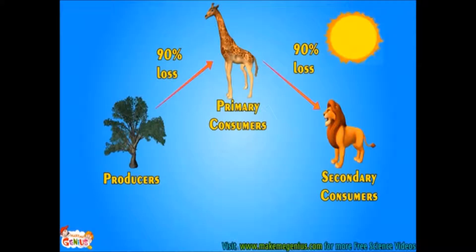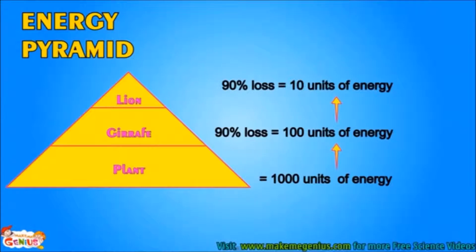So does the giraffe get all the energy from the plant, which the plant received from the sun? Or does the lion get all the energy from the giraffe, which the giraffe got from the plant? The answer is no. Actually, 90% of energy is lost when it passes from one part of the food chain to another. Like 90% of energy is lost when the giraffe eats the plant. Similarly, 90% is lost between the lion and the giraffe. Take a look at this pyramid — it is called the energy pyramid. This shows that the energy available becomes lesser and lesser as we move on to the top of the food chain.